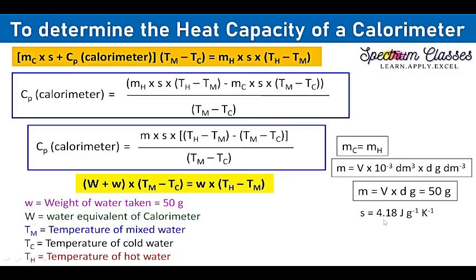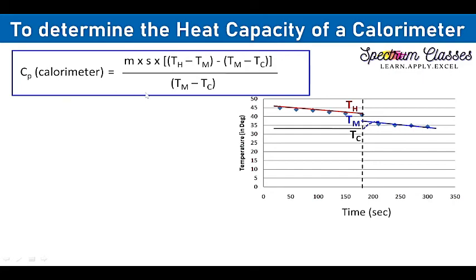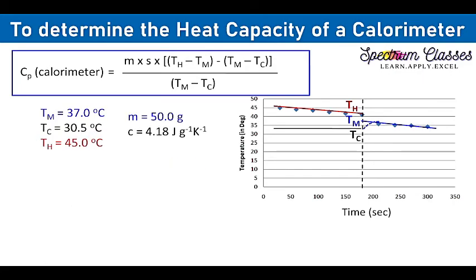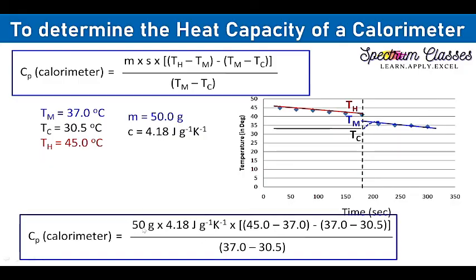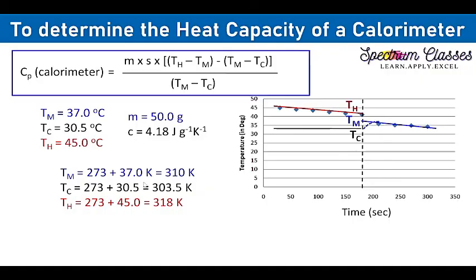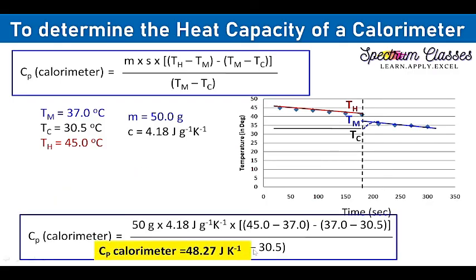This is equal to 50 grams simply, and S is 4.18 joules per gram per kelvin. So here is the formula and here are the values. We are going to put in: mass of water = 50 g, specific heat of water, and the temperature changes in the hot water, cold water, and the mixture. For your understanding I have written in kelvins — if I subtract the hot water temperature from the mixture temperature I will get the same value as from degrees centigrade, so no need to worry about kelvins versus degrees centigrade in this case. On solving this, the heat capacity of the calorimeter is equal to 48.27 joules per kelvin.